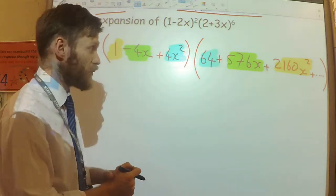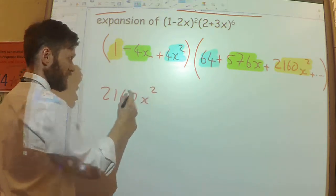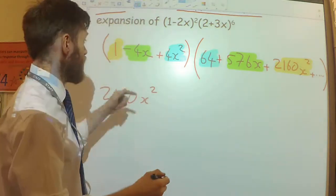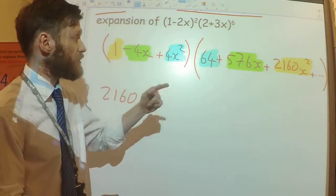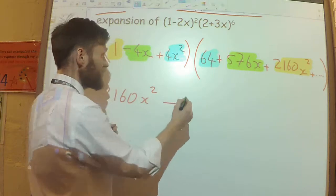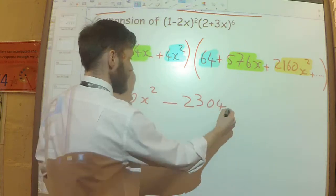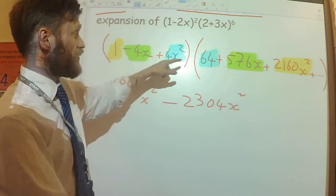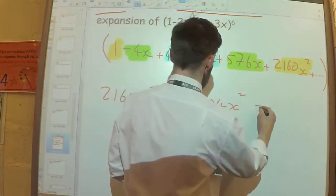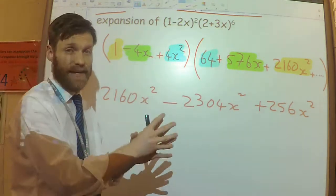Let's work out what each of those would be. The 1 times the 2160x is that. Then, I've got the minus 4x times 576x, which is going to be a minus. It's going to be 2304, I think, x squared. And then, the 4x squared times 64 is 256x squared. Those are my x squared terms.